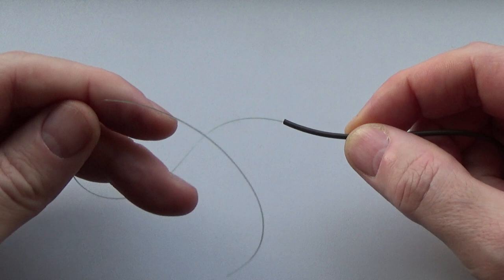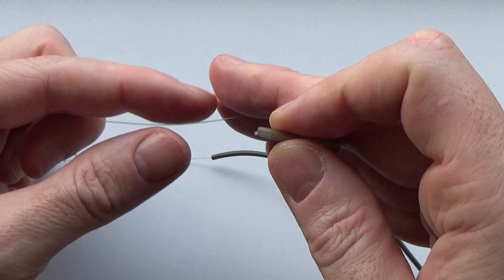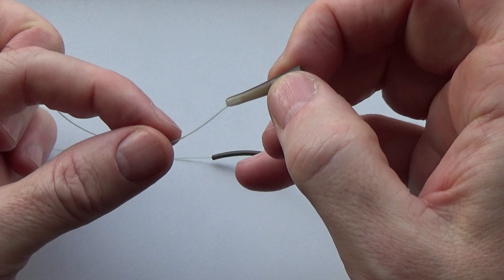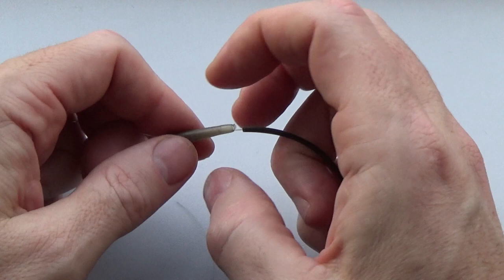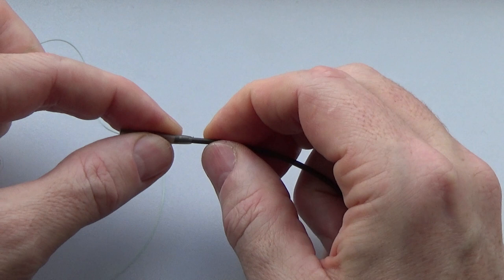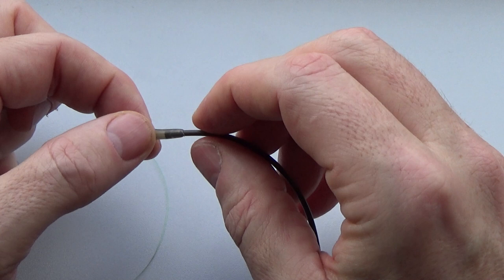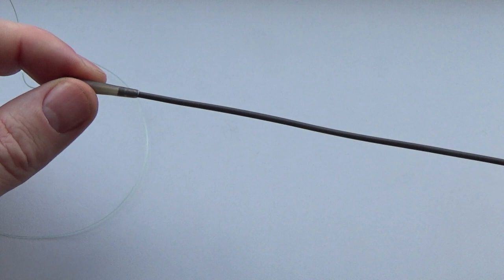So once your line's threaded through the tubing, add a tail rubber. The tail rubber goes on thin end first and just threads straight through like so. You can push the tubing into the tail rubber. I find if you twist the tail rubber one way and the tube in the other, it should push in.